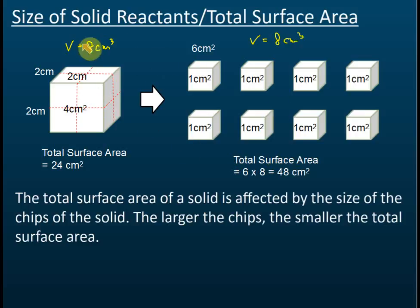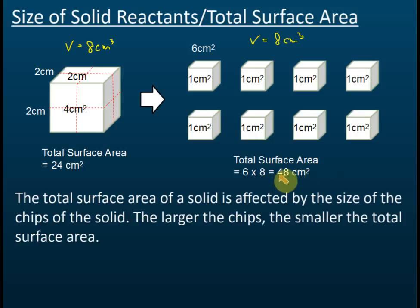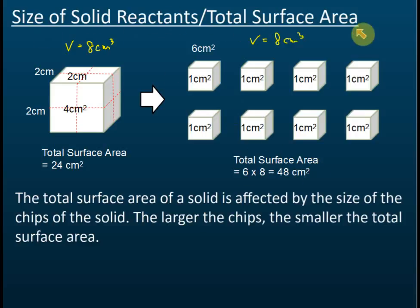The volume is the same — these eight pieces came from the same original cube — but by breaking it into smaller pieces, the total surface area becomes much bigger: 48 cm² compared to 24 cm². We can conclude that if the volume is the same, the smaller the particles, the bigger the total surface area, and the bigger the total surface area, the higher the rate of reaction.